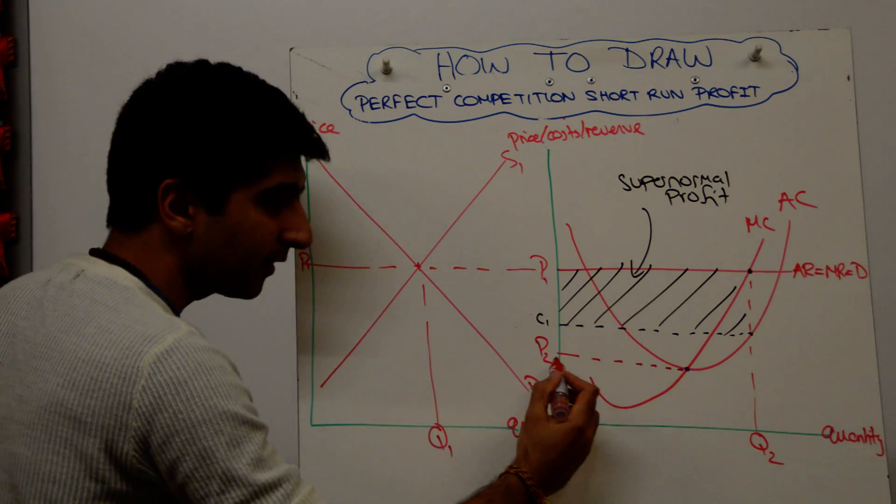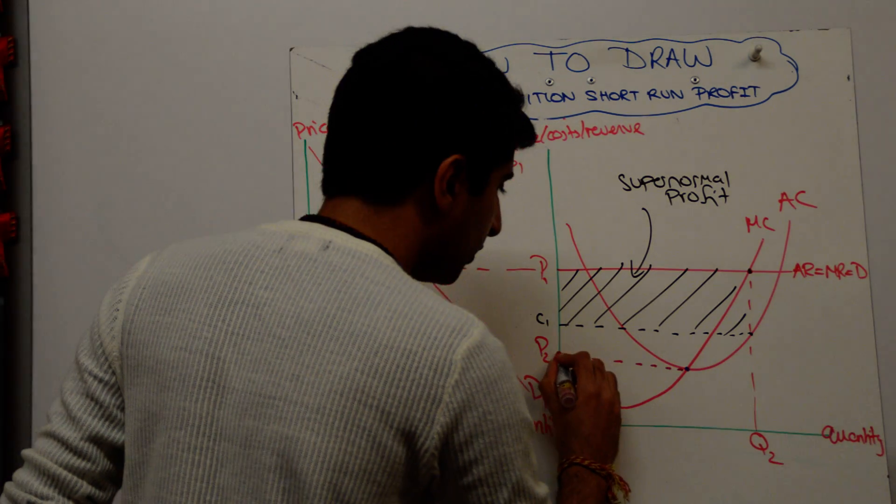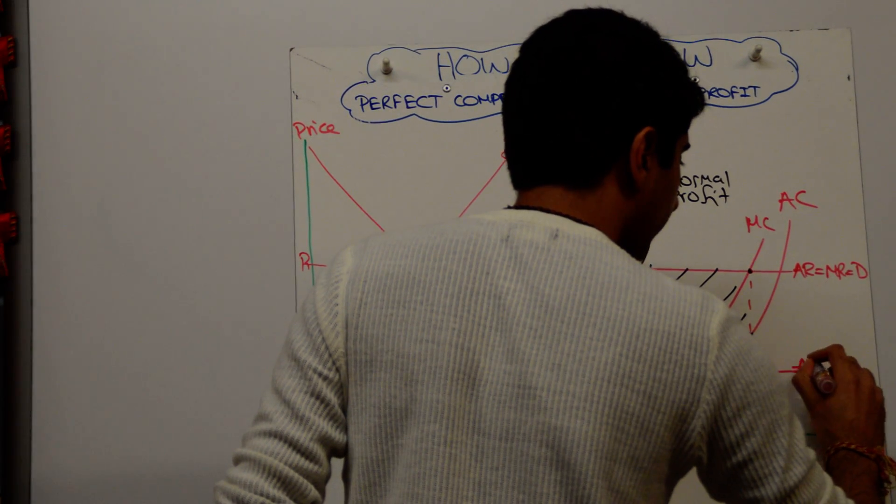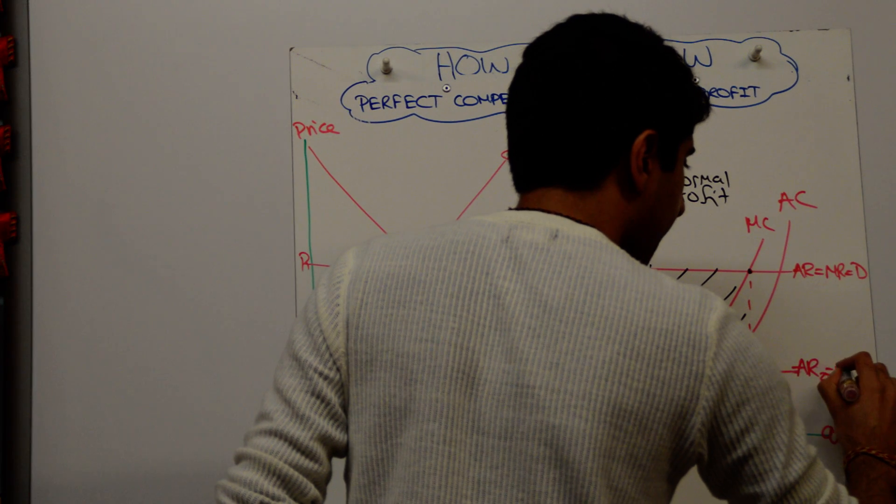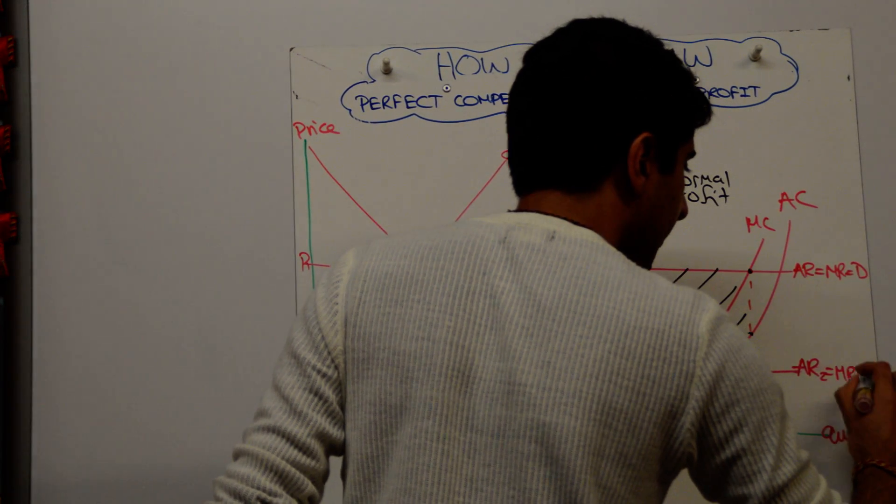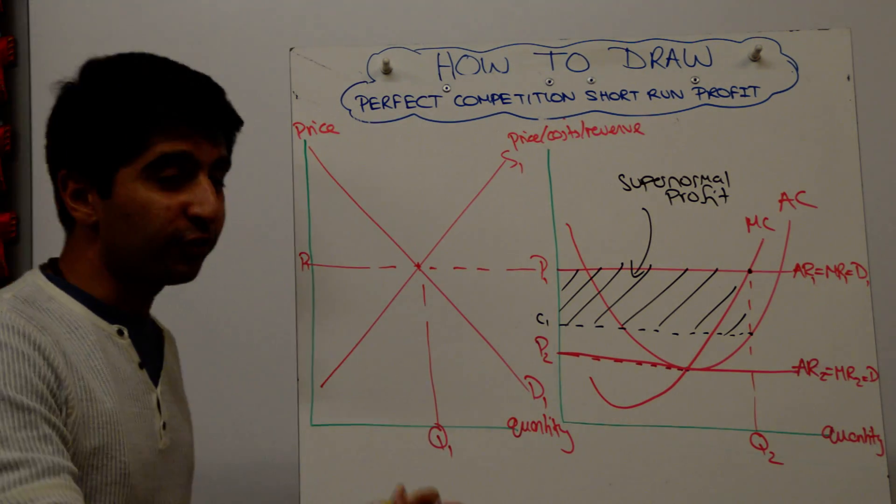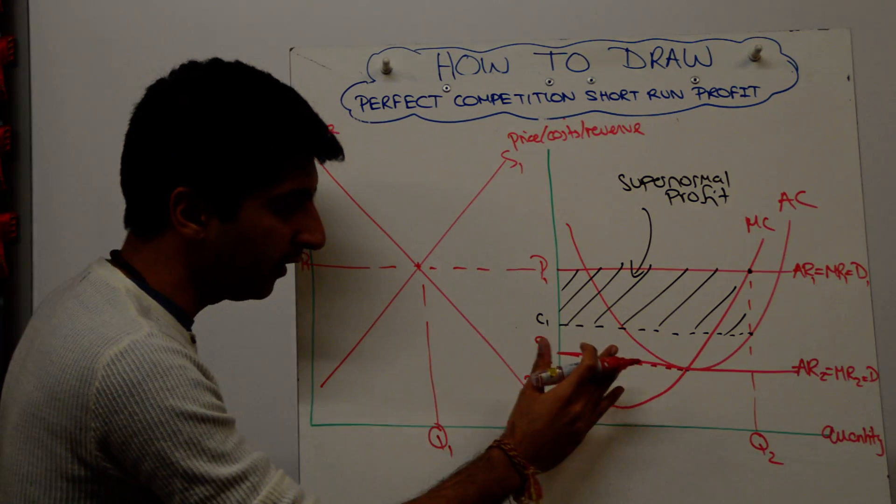Call it P2. And if that's going to be the price, that's also going to be the new average revenue marginal revenue demand curve. So let's call that AR2 equals MR2 equals demand. We're going to call that 1, 1 and 1. So start backwards. You know that's where you're going to finish. So do that first. And then take this price across into the market.